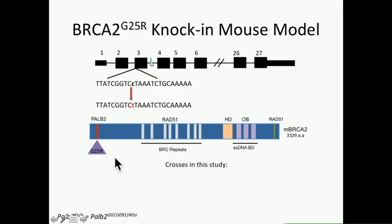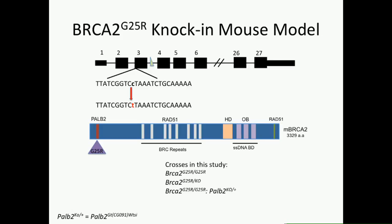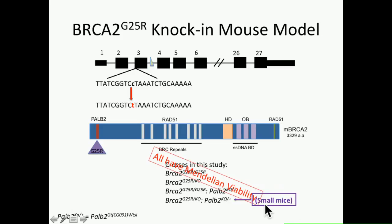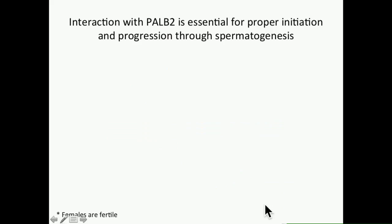I used multiple crosses within this study: the G25R HET, which is comparable to wild type; the G25R homozygous; a G25R homozygous crossed with the BRCA2 null, so you have only one copy of G25R versus the homozygous with two copies; then the G25R homozygous crossed with a PALB2 HET knockout; and the G25R hemizygous with a PALB2 HET knockout. When these animals were born, everything showed Mendelian viability.